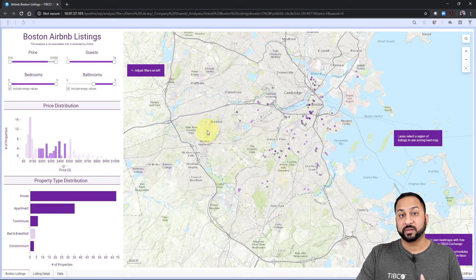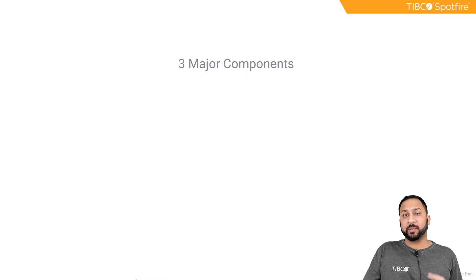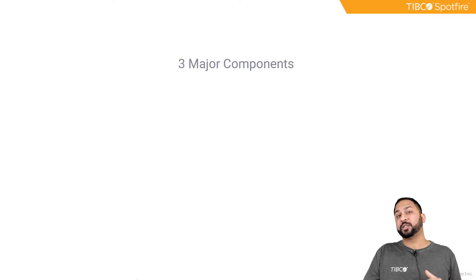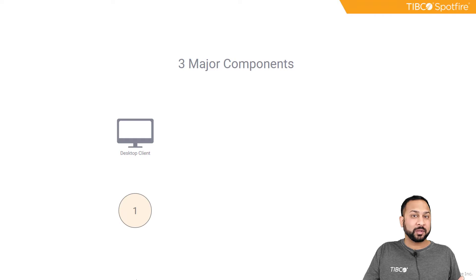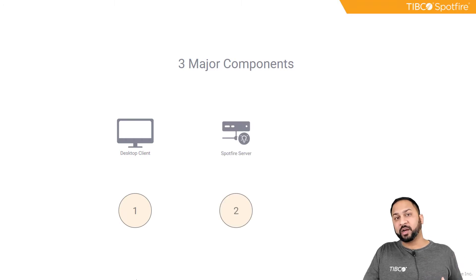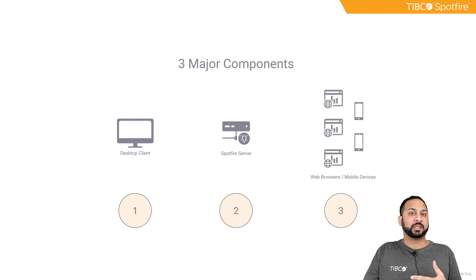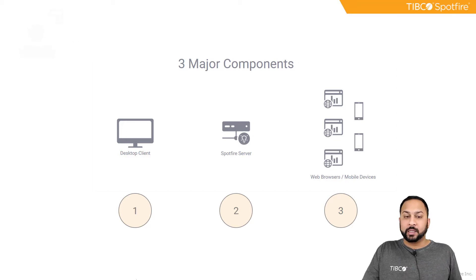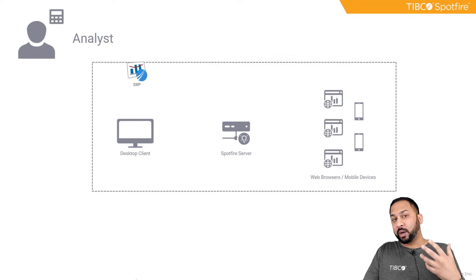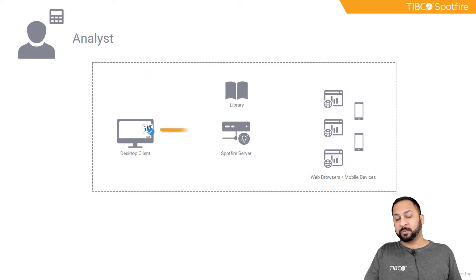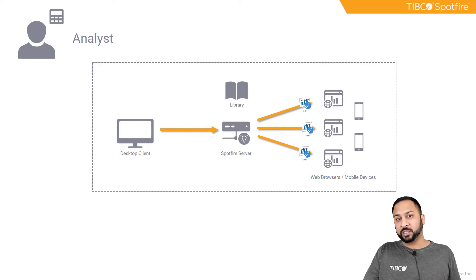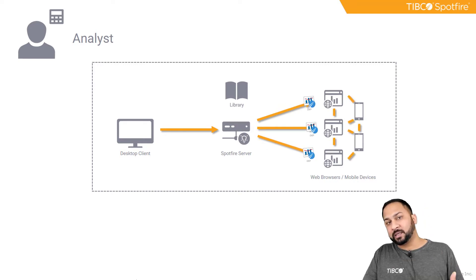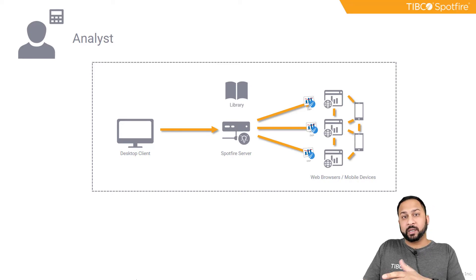Let's talk about the library and the major components of the Spotfire environment. From a user perspective, there are three major components: the desktop client, the Spotfire server environment, and the web player, which covers web browsers and mobile device usage — the consumption layer. An analyst creates right on the desktop client, producing a Spotfire DXP file. They can save that into the library in the Spotfire server environment, and it can then be accessed on the web player by all users who have permission.